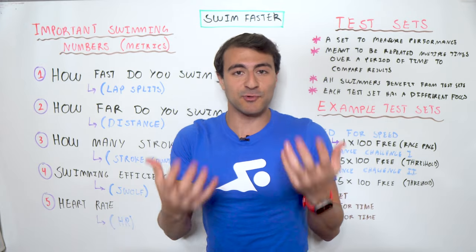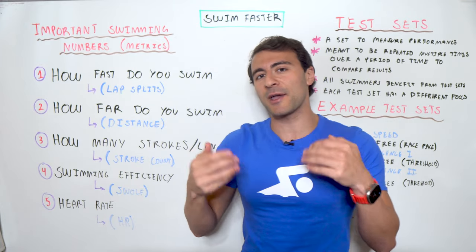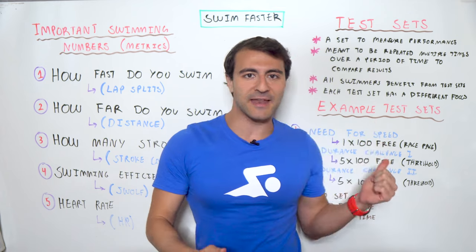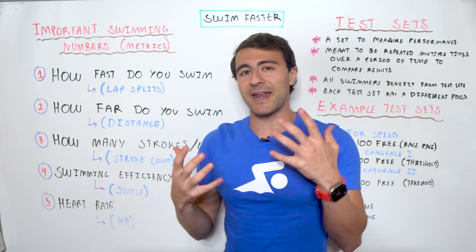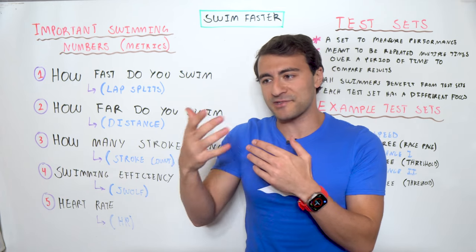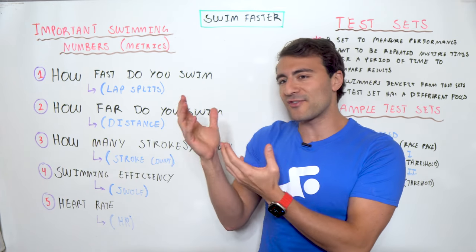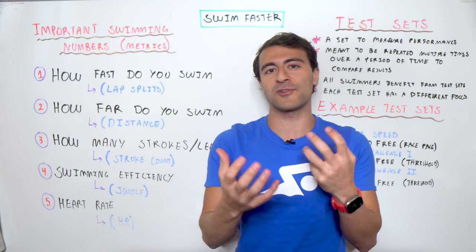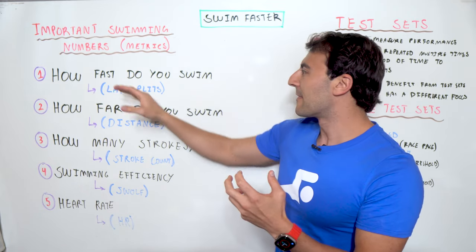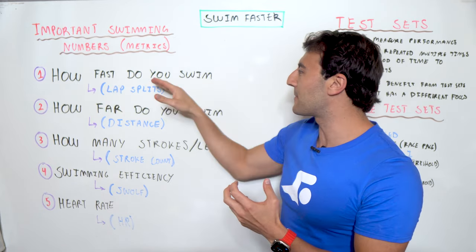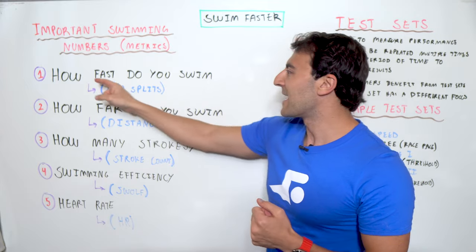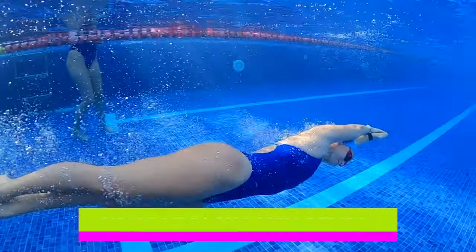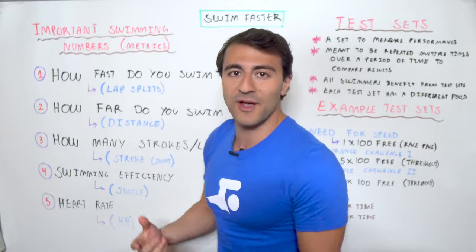Let's talk about those five different metrics and how you can assess them in swimming terms. We'll go through the test sets at the end of the video, and I'll bring in the MySwimPro app so you can see a digital version of what these numbers actually look like in practice. The first metric is: how fast do you swim?